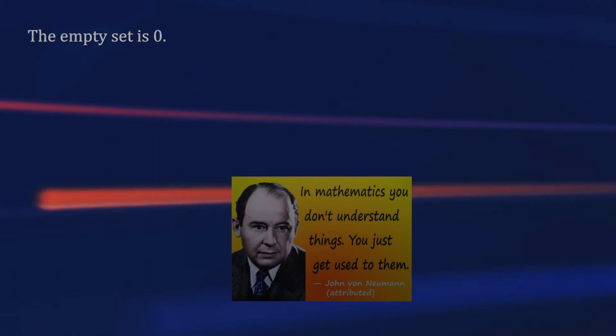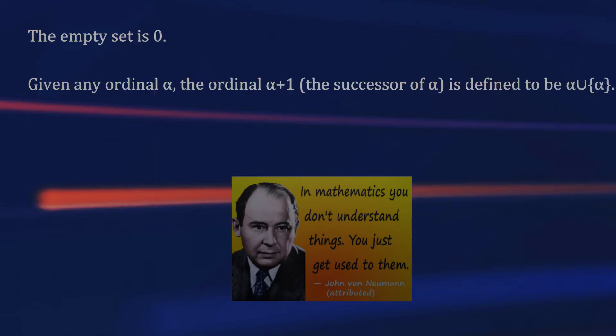However, the most used representation is von Neumann's construction. The ordinals can be constructed by transfinite recursion as follows. The empty set is zero. Given any ordinal, its immediate successor is defined to be the union with the set containing only itself. Given a set of ordinals, the big union of the set is an ordinal.